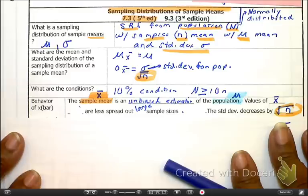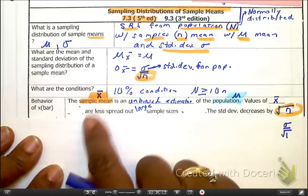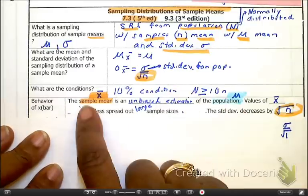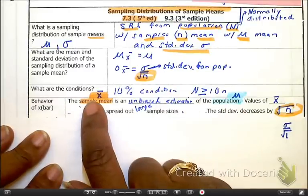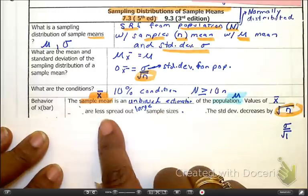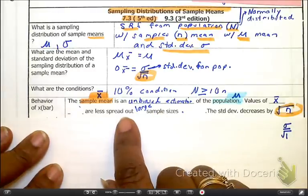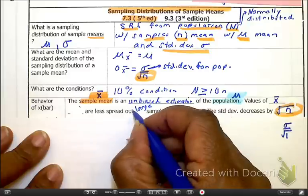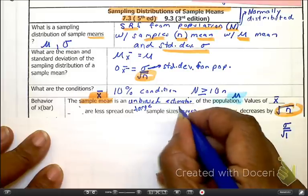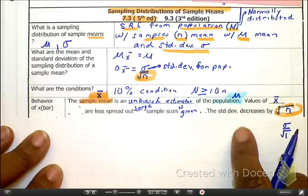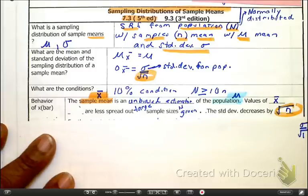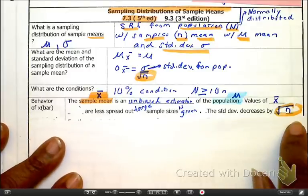We know that the sample mean is an unbiased estimator of the population, so we can use your sample means to represent that of the population. We also know that the values of X̄ are less spread out when you have a large sample size.